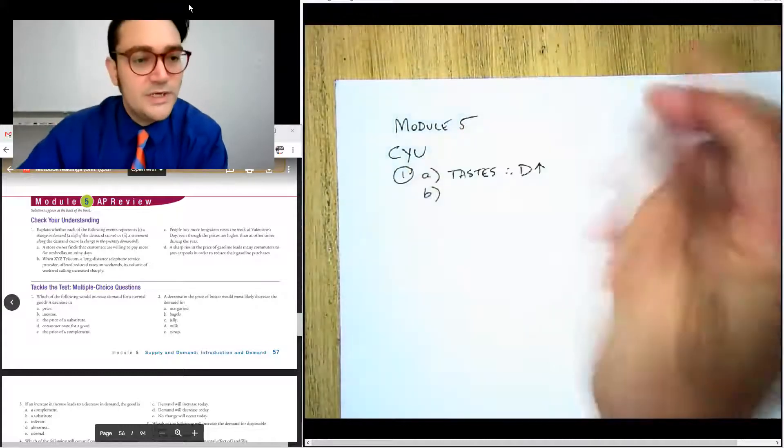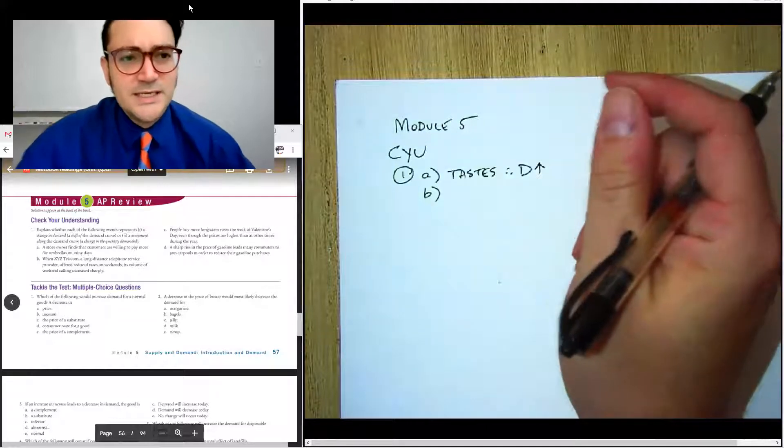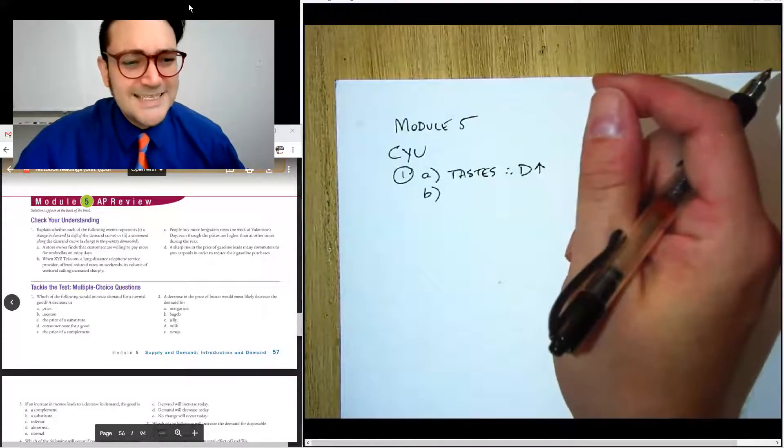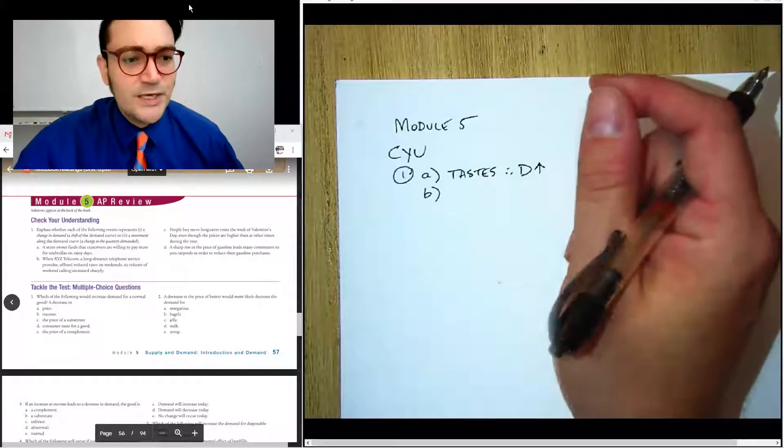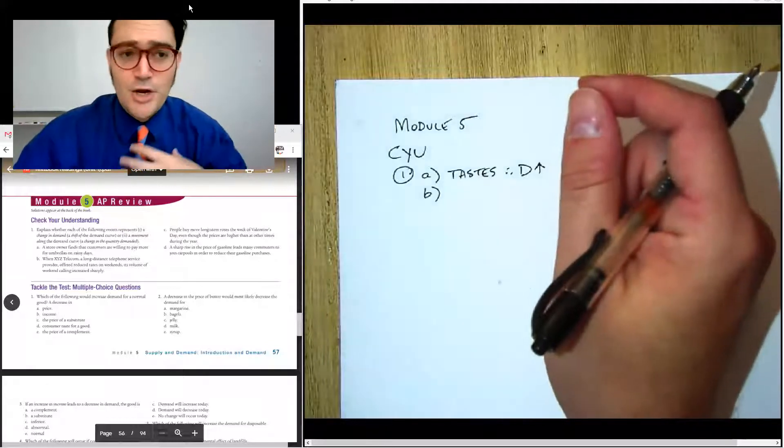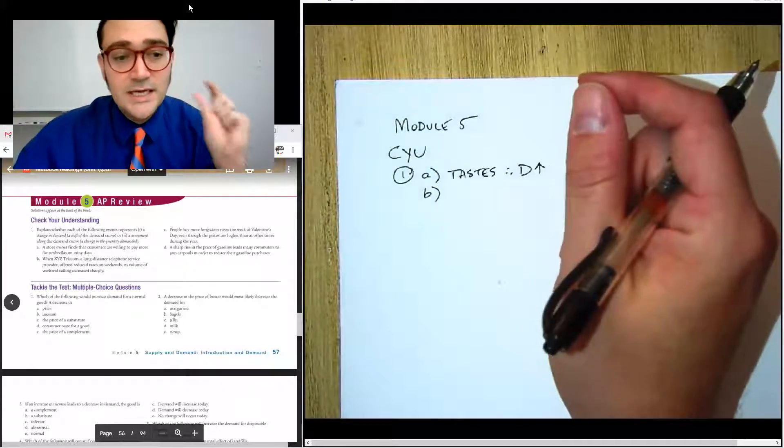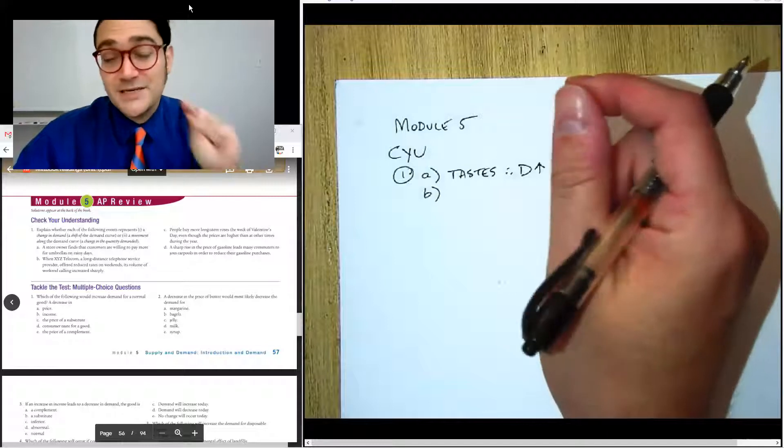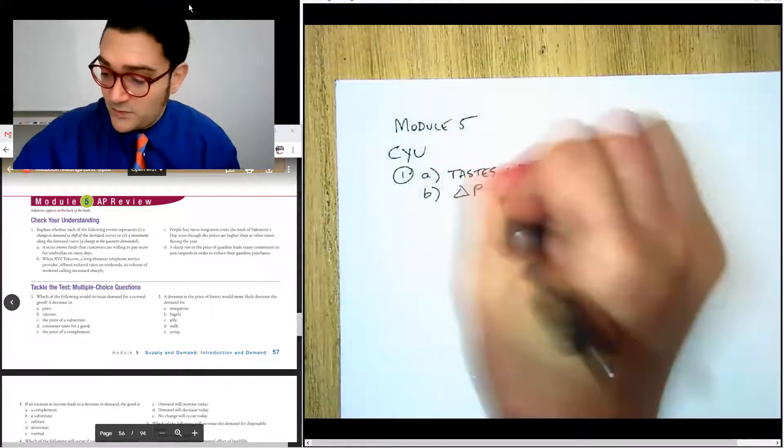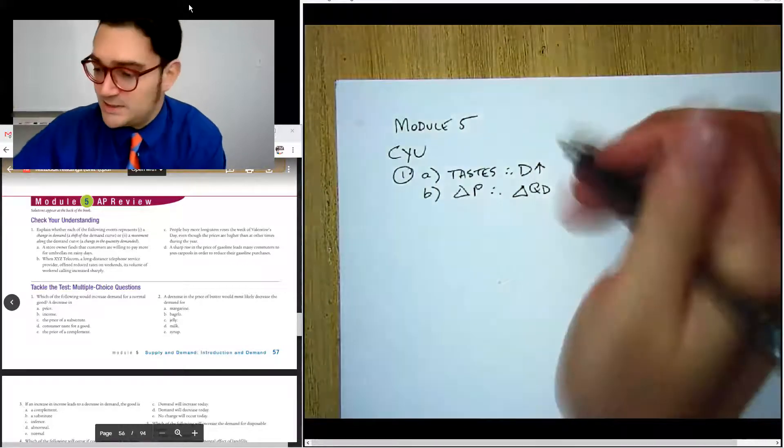For B, we're going to say when XYZ Telecom, a long distance telephone service, boy that's like dating this textbook a little bit, offered reduced rates on weekends, its volume of weekend calling increased sharply. So putting aside the fact that they used to do this like back in my day, this is saying the price of the telephone call changes and therefore the volume or the quantity of telephone calls changes. This is just saying a change in price, therefore a change in quantity demand.